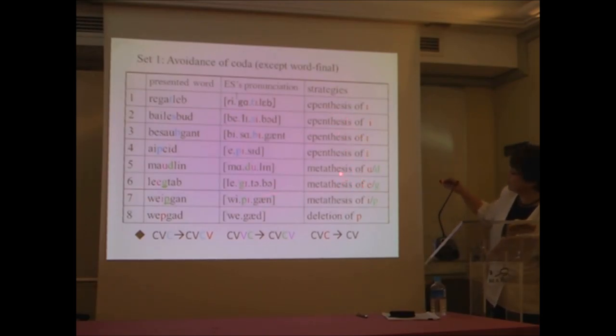And then metathesis. So number five, 'maudly.' The syllable boundary is between D and L. And she doesn't know what to do with this D, this coda consonant. So what she did is she exchanged the U, the preceding vowel and this consonant, ended up in 'do-lay': CV, consonant vowel, consonant vowel units. And these are the three examples.